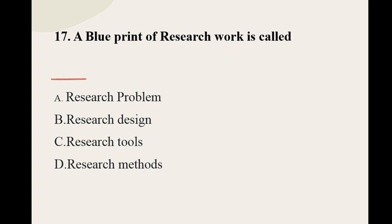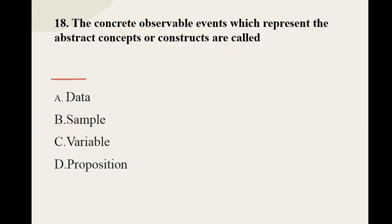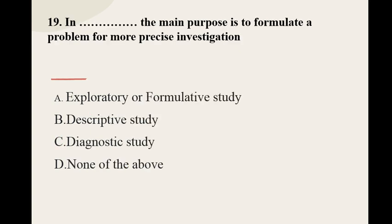Question number seventeen: A blueprint of research work is called dash. Options are research problem, research design, research tools, and research methods. The correct option is research design. Question number eighteen: The concrete observable events which represent abstract concepts or constructs are called dash. Options are data, sample, variable, and proposition. The correct option is variable.